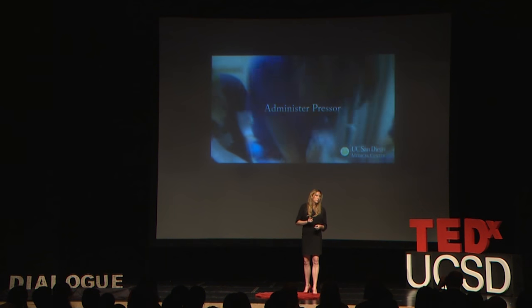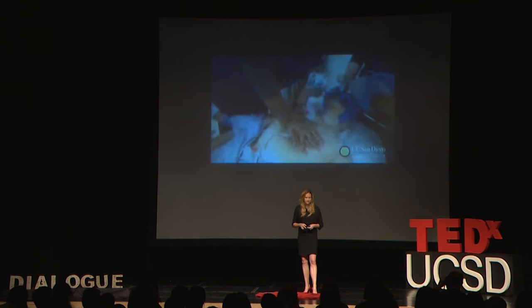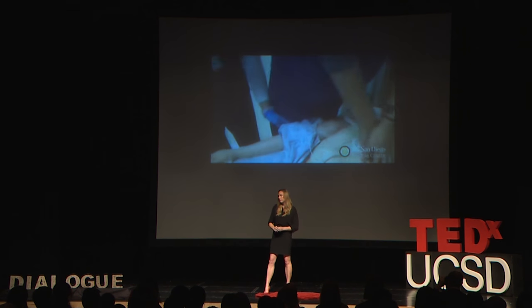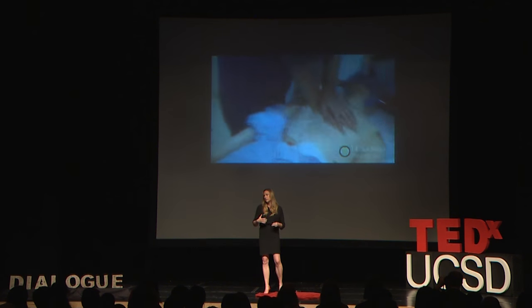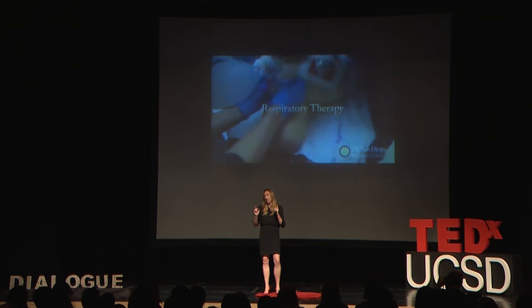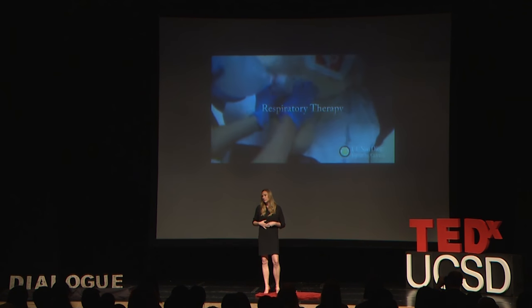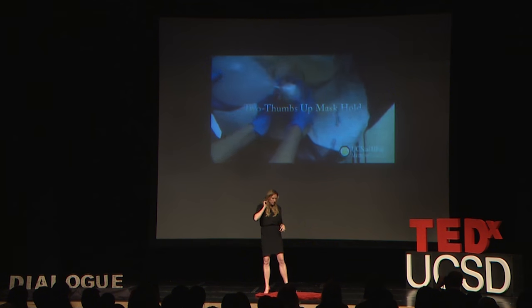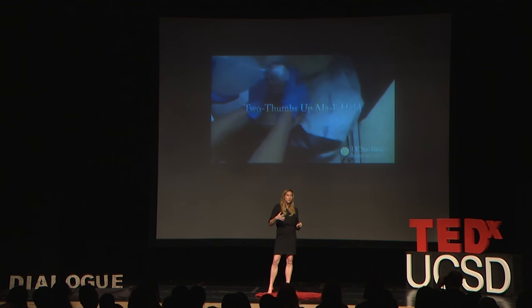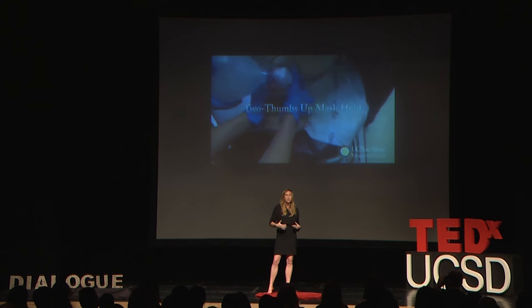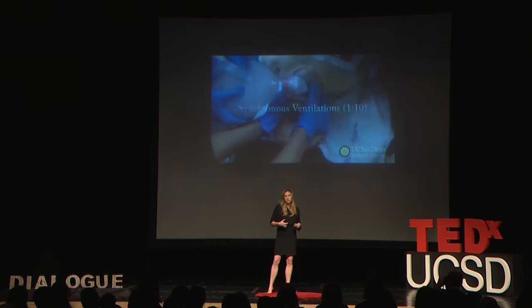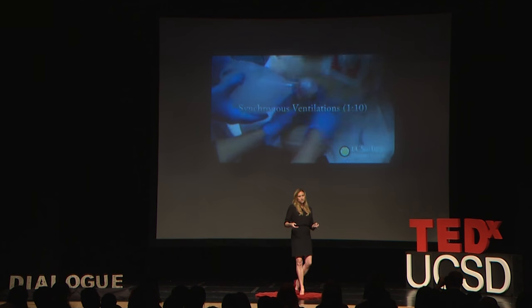C is for compression. Compressions are done on the patient's chest in order to course blood through the heart and lungs, delivering oxygenated blood to the brain, vital organs, and the heart itself. In doing these compressions, we can often break the patient's ribs and damage their lungs and other surrounding structures.